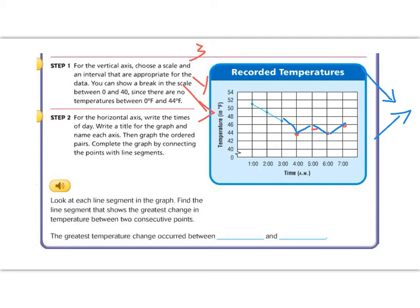It says look at each line segment in the graph. Find the line segment that shows the greatest change in the temperature between two consecutive points. So if we look at between 1 o'clock and 2 o'clock we went from 51 to 49. From 2 o'clock to 3 o'clock we went from 49 to 47. Okay, so 51 to 49 is only a change of two, but from 49 to 47 that's a larger change.